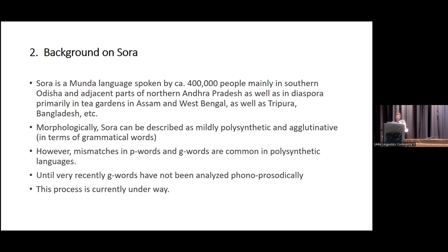Sora is a Munda language spoken by roughly 400,000 people, mainly in southern Odisha and adjacent parts of northern Andhra Pradesh in central India. There are also Sora populations found in various tea garden areas — Assam, West Bengal, Tripura, and Bangladesh — dating to within the last 200 years. Morphologically, Sora can be described as mildly polysynthetic and agglutinative. Mismatches in P-words and G-word structure are common in polysynthetic languages, and G-words had not been analyzed phonoprosodically in Sora until our team undertook this work.